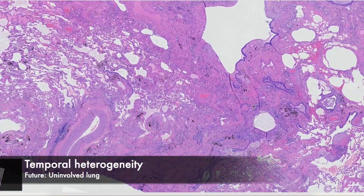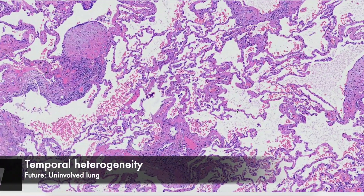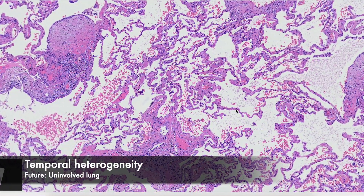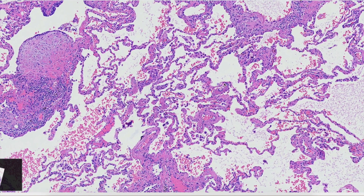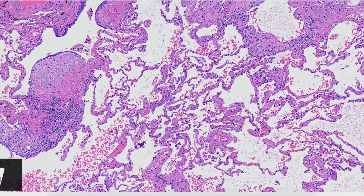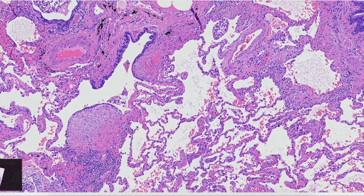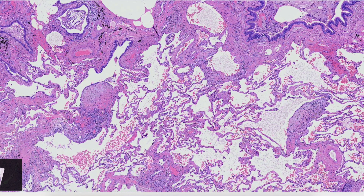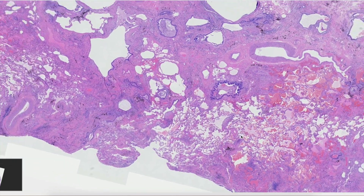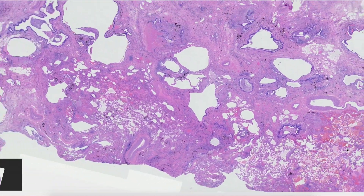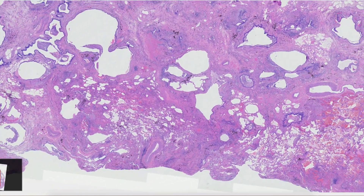The future of temporal heterogeneity is the uninvolved lung — areas that have not yet been affected but are adjacent to architecturally distorted and fibrotic lung. If this process continues, these areas will become fibrotic. That's a case of usual interstitial pneumonia.